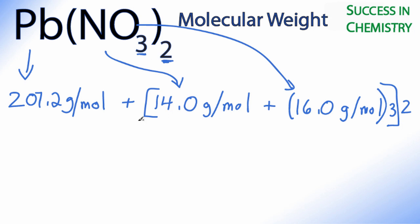I can go ahead and add up the final number. So when I look at the numbers here, I have 16.0 times 3. That gives me 48.0 grams per mole. So I can take my 207.2 and then add that to the 14 plus 48. That's 62.0.